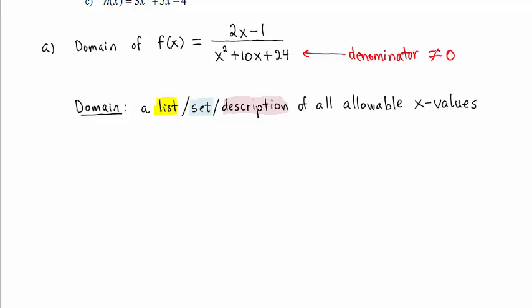instead of looking directly for allowable x values, we will look for non-allowable x values. The denominator x squared plus 10x plus 24 cannot equal 0.